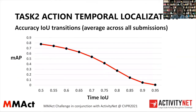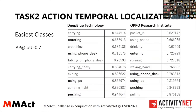Task two is action temporal localization. This shows the overall average across all submissions with MAP versus time IOU. As you can see, if we set the threshold for time IOU higher, MAP significantly decreases, which explains that task two is significantly harder than task one. The top two teams are Deep Blue Technology and OPPO Research Institute. Classes with relatively higher AP — meaning easier classes — include entering, using phone desks, using PC, and pushing.